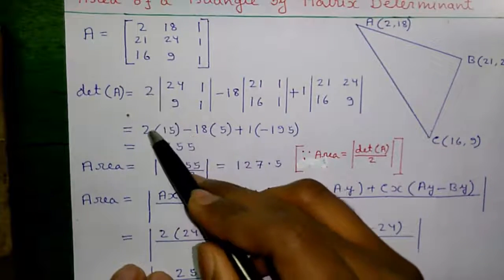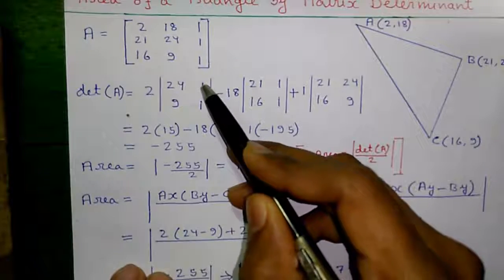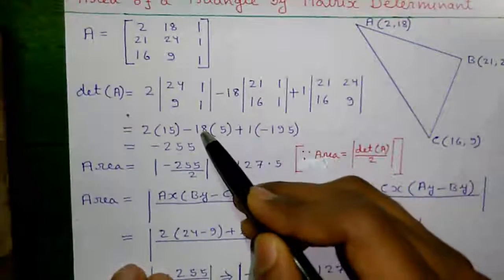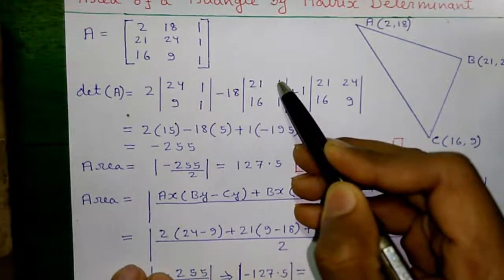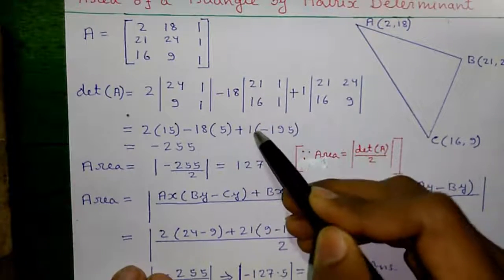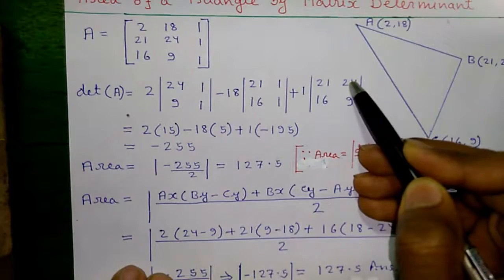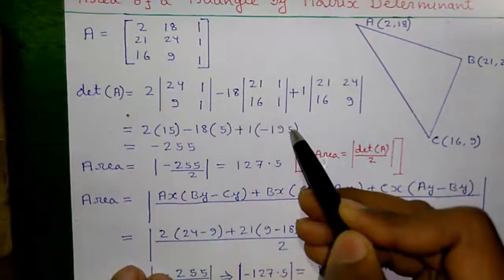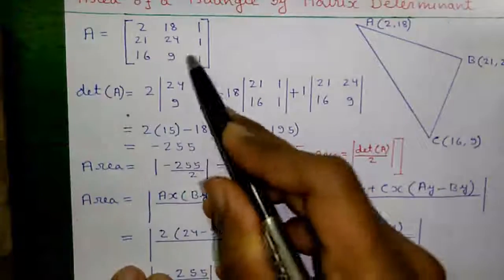That is equals to 2 into this number to this number minus this number to this number. That is 24 minus 9 is 15. Minus 18 into this number to this number minus this number to this number. That is minus 195. So, by multiplying and adding them up, you will get minus 255, which is determinant of the matrix A.